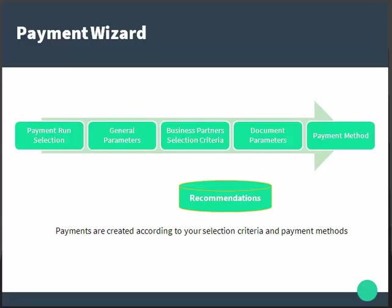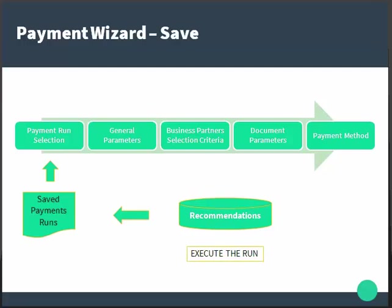Based on all these steps and selection criteria, the system creates a recommendation report — a list of suggested payments. You can either accept or reject these recommendations. After that, you can execute the run, and your next run can be based on the previous run or you can define entirely new parameters.